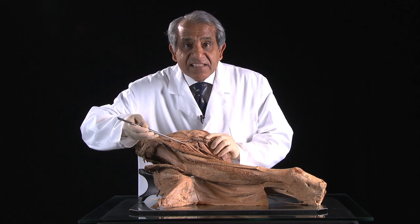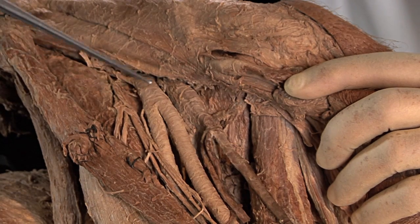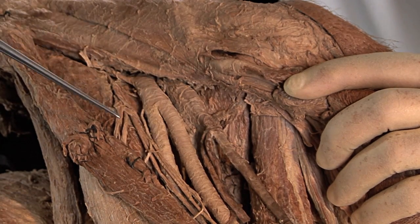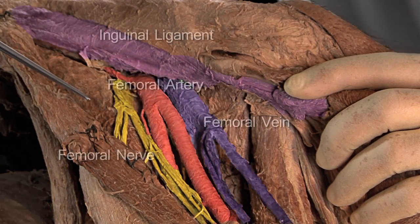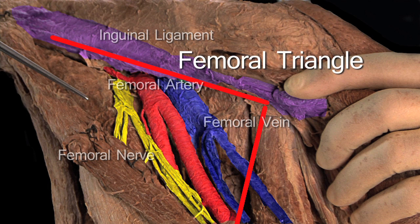As soon as they enter the thigh below the inguinal ligament, they find themselves in a very interesting intermuscular area, which we call the femoral triangle, because it lies within a triangular outline.